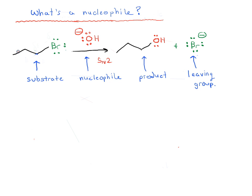We have propyl bromide reacting with hydroxide ion — you can imagine there's a sodium or potassium present, it doesn't matter. We have propyl alcohol as our product and Br⁻ as our leaving group. So this video is going to be about nucleophiles and understanding what this word means.